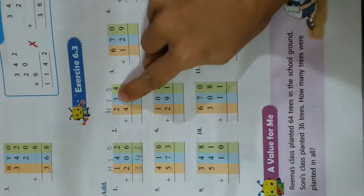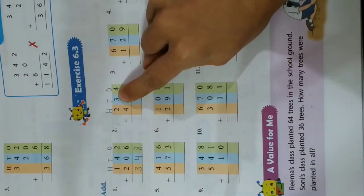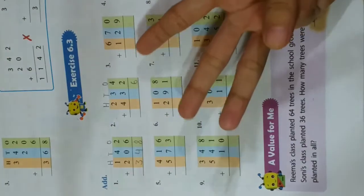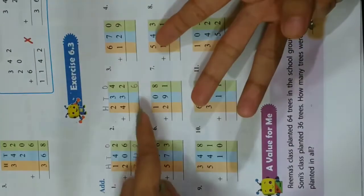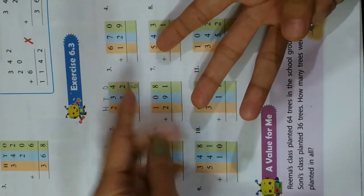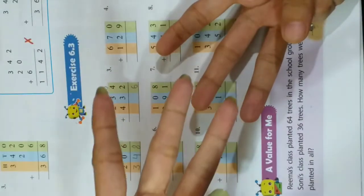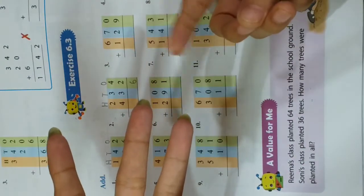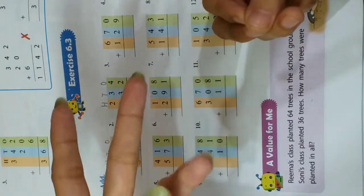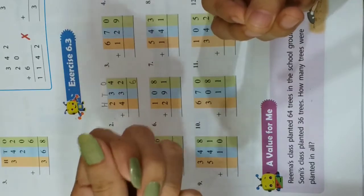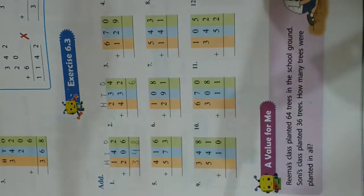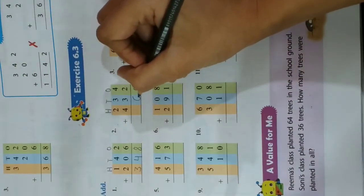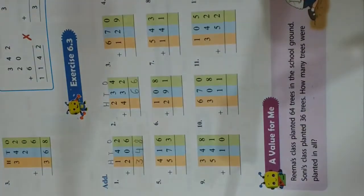Now at tens place, 3 is on top — take out 3 fingers. Again 3 below — take out 3 more fingers. Start counting: 1, 2, 3, 4, 5, 6. You get 6, so write 6 over here.